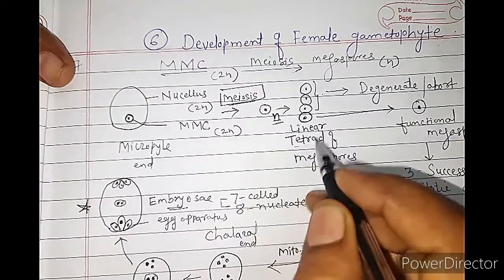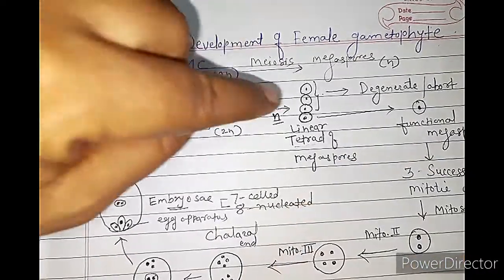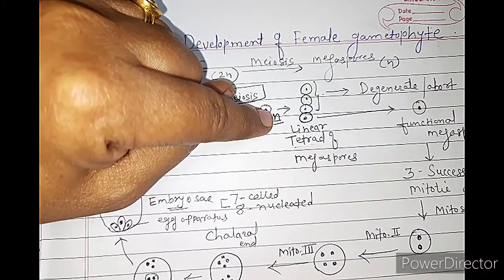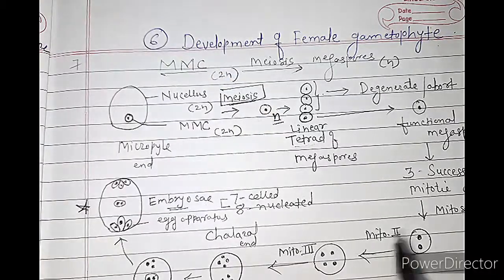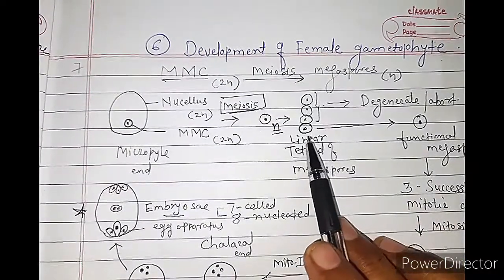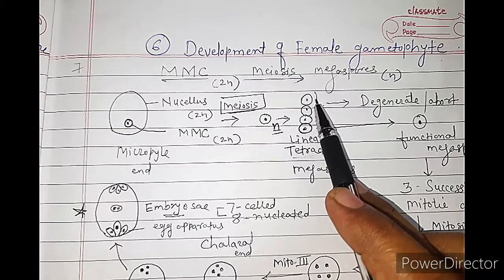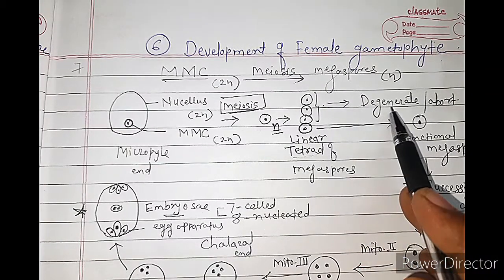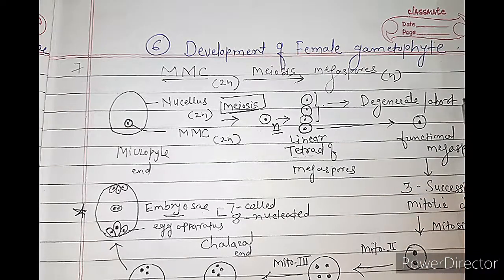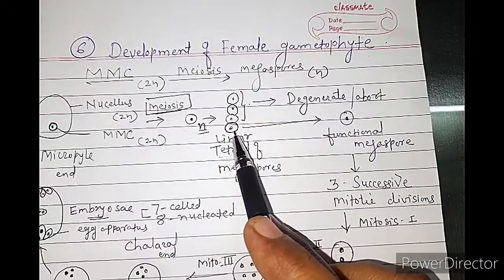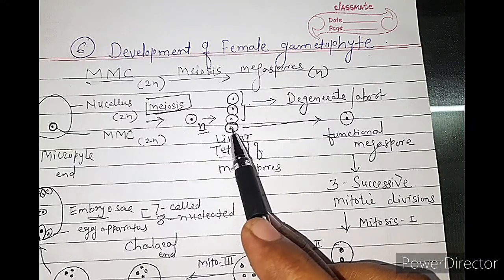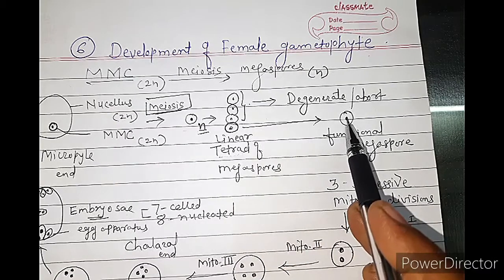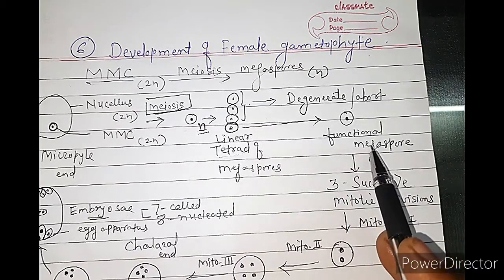Tetrad means 'tetra,' which means 4. So here 4 megaspores are formed which are haploid in nature. Out of these 4 megaspores, the upper 3 megaspores degenerate — they abort — and only 1 megaspore towards the micropylar end remains functional. This is called the functional megaspore.